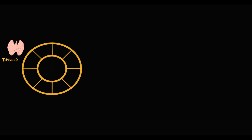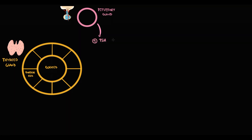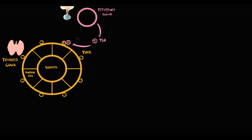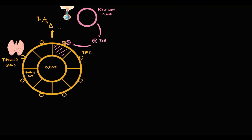Here we have the thyroid gland, which consists of follicular cells and colloid. The pituitary gland provides regulation of the thyroid gland by producing thyroid-stimulating hormone. This hormone binds to TSH receptors on follicular cells, stimulating them to increase production of thyroid hormones into the blood. The two major thyroid hormones are triiodothyronine and thyroxine, known as T3 and T4.